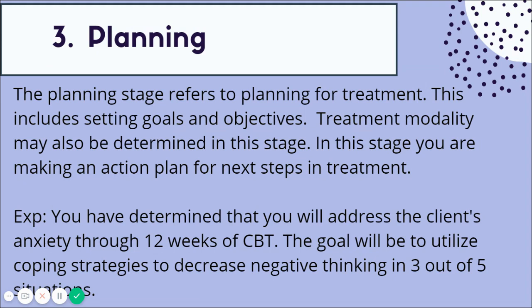For the anxiety example, in the planning phase you might determine you're going to address anxiety through 12 weeks of CBT, with a goal for the client to utilize coping strategies that decrease negative thinking in three out of five situations. You want your goals to be specific — not just 'I want the client to improve.' Make sure goals are realistic. If the client's baseline is that they're using no coping techniques right now, don't aim for 100% improvement. Make sure goals are reasonable and planned together with the client.